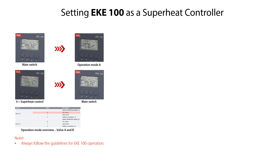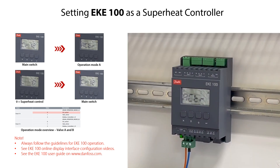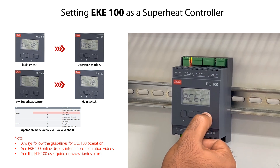Press the arrow up key to return to the main switch CR12 mode. From the CR12 mode, you can access and set relevant superheat controller parameters by pressing the arrow down key. This is shown in another EKE100 online display interface configuration video. Please also refer to the EKE100 user guide for details about how to read the display, understand the navigation structure, and understand the parameter abbreviations.